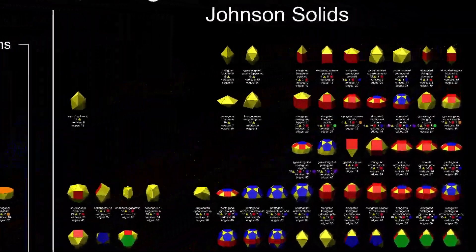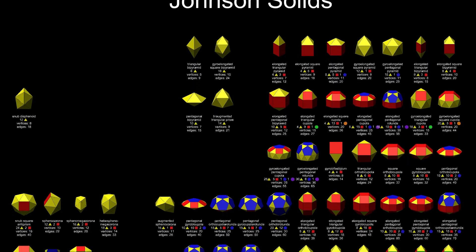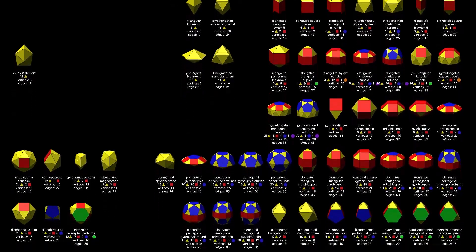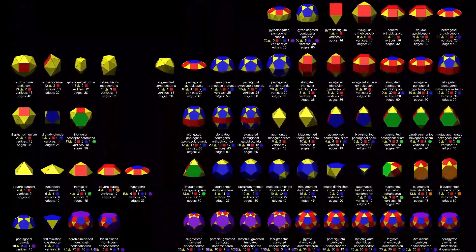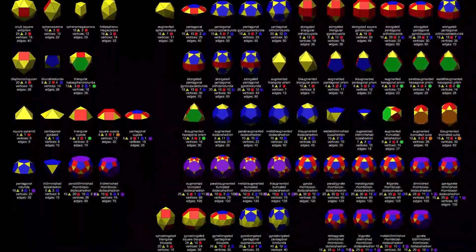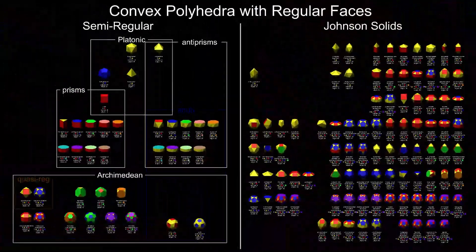Moving on to the Johnson solids, these 92 shapes don't have any such obvious subclassifications, but most of them can be built by cutting up and gluing together semi-regular polyhedra. There are only nine that can't. I call these the exotic Johnson solids.